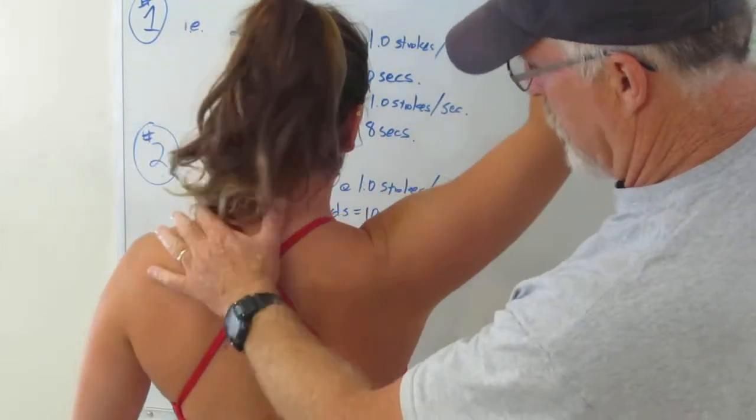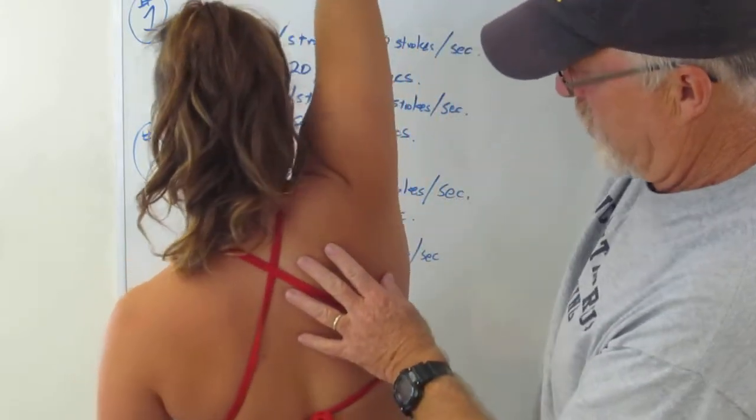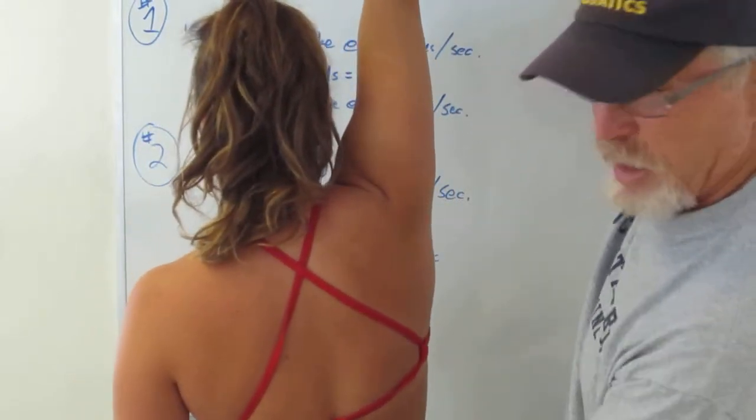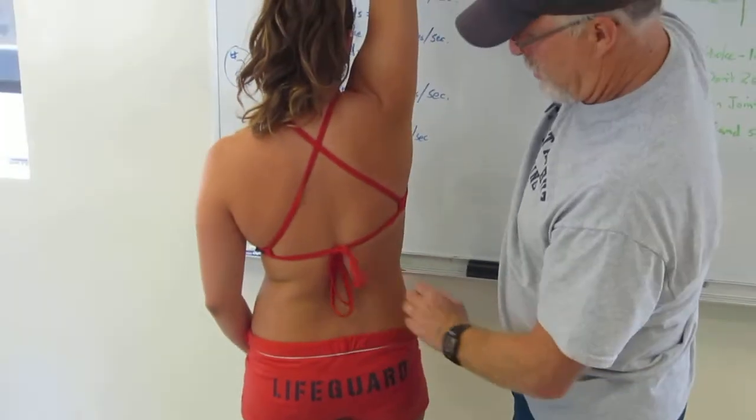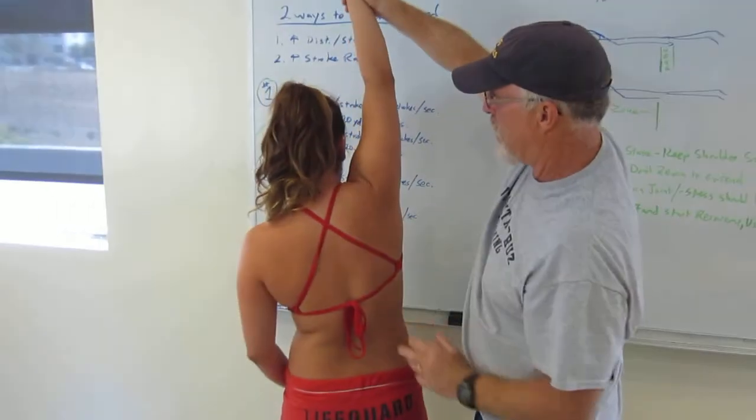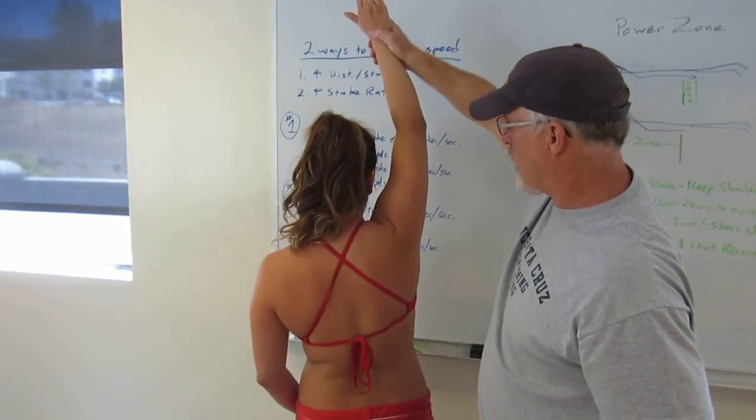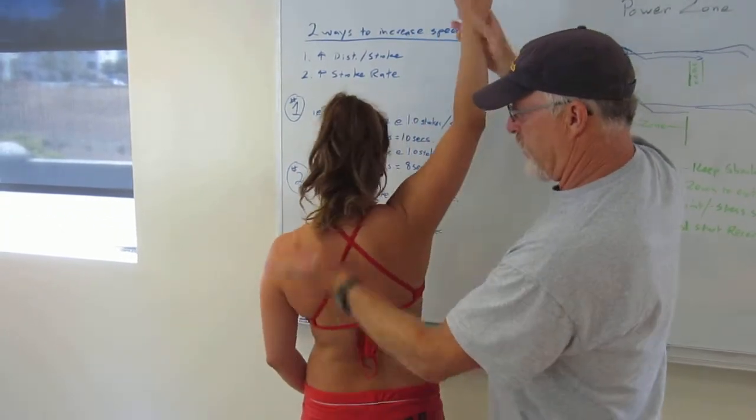The other thing that happens, as you can see, as she starts to overextend, her hips slide. And what happens then is she actually increases her resistance going through the water and she can end up actually fishtailing.